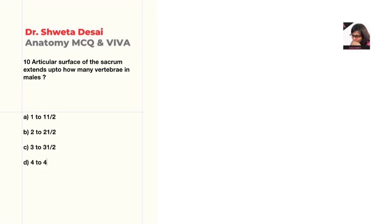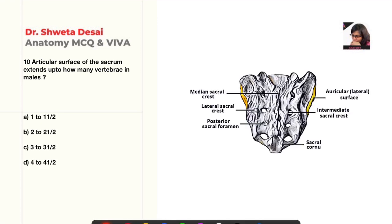Next: the articular surface of the sacrum extends up to how many vertebrae in males — one to one and a half, two to two and a half, three to three and a half, or four to four and a half? The correct answer is C, three to three and a half vertebrae.